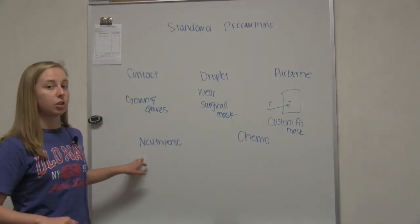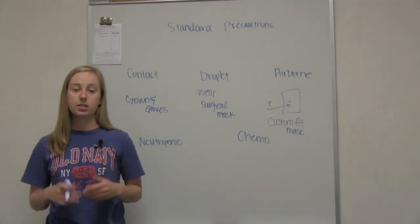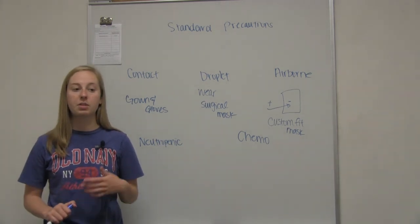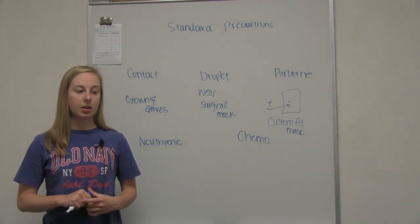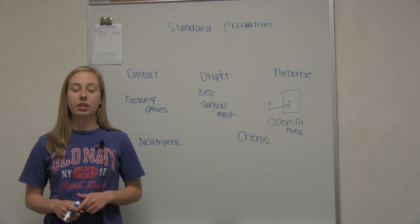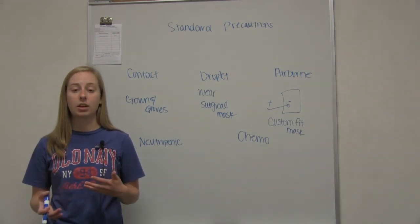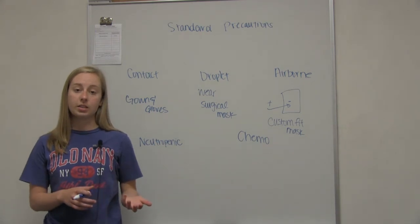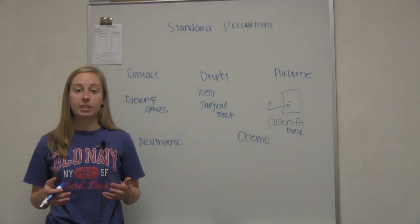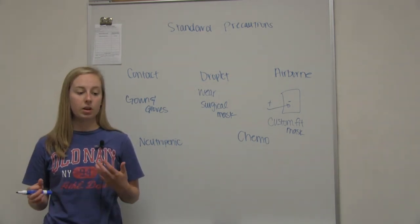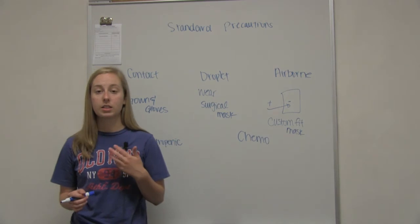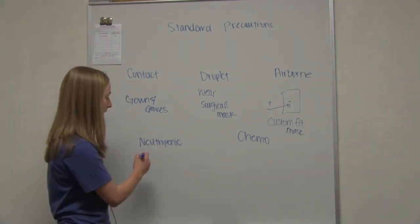Neutropenic means we are protecting the patient from us. This is for immunocompromised patients - maybe somebody with a severe form of AIDS or somebody getting chemotherapy. We've got to make sure their low white blood cell count doesn't affect their healing process. Wear gown, gloves, and mask always when you go into their room. Wash your hands really well before you go in to make sure you aren't spreading any diseases to them. A huge thing with this: don't take care of a patient if you're sick.